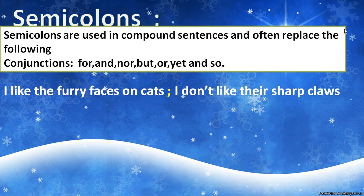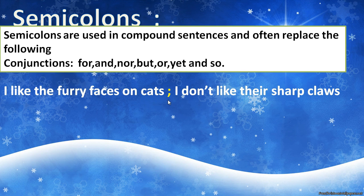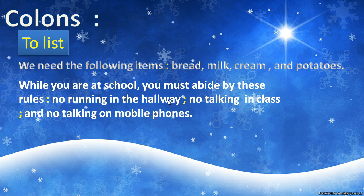Semicolons. Semicolons are used in compound sentences and often replace the following conjunctions: for, and, nor, but, or, yet, and so. Example: 'I like the furry faces on cats; I don't like their sharp claws.' In this case you could replace the semicolon with the conjunction 'but': 'I like the furry faces on cats, but I don't like their sharp claws.'